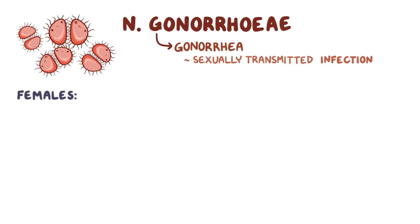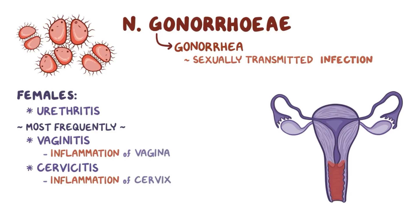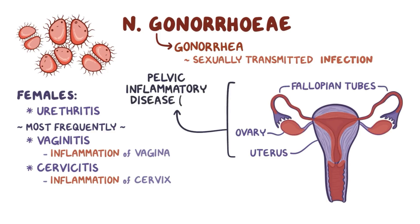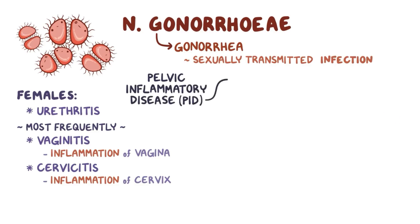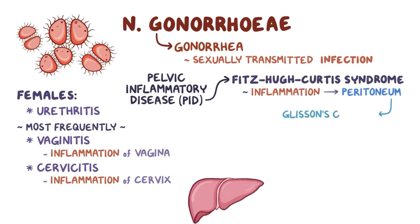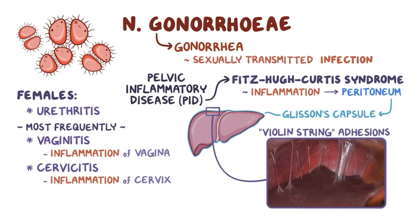In females, N. gonorrhoeae can also cause urethritis, but most frequently it causes vaginitis and cervicitis, so the inflammation of the vagina and cervix, respectively. Through the cervix, N. gonorrhoeae can spread to the uterus, the fallopian tubes, and sometimes even the ovaries, causing pelvic inflammatory disease, or PID. Finally, PID can cause a complication called Fitzhugh-Curtis syndrome, which happens when the inflammation spreads to the peritoneum, and from there to Glisson's capsule, which surrounds the liver. This results in violin string adhesions, or thin strings of scar tissue that attach the liver to the peritoneum.